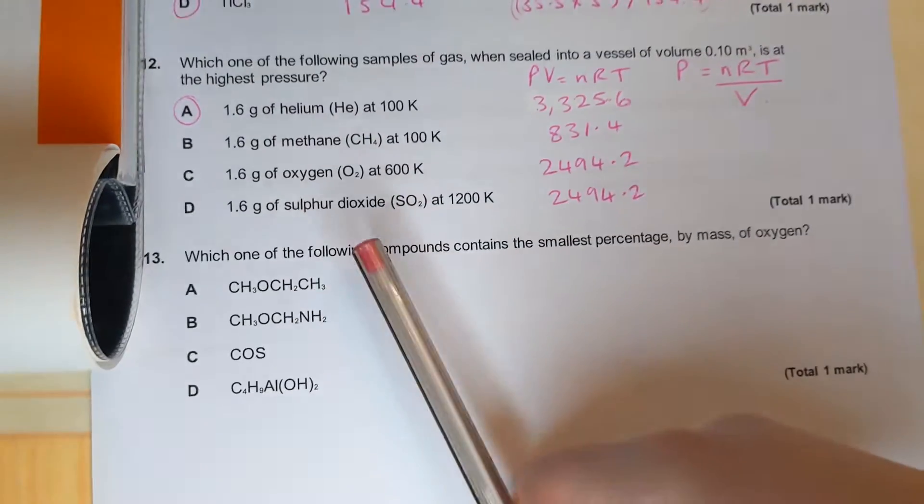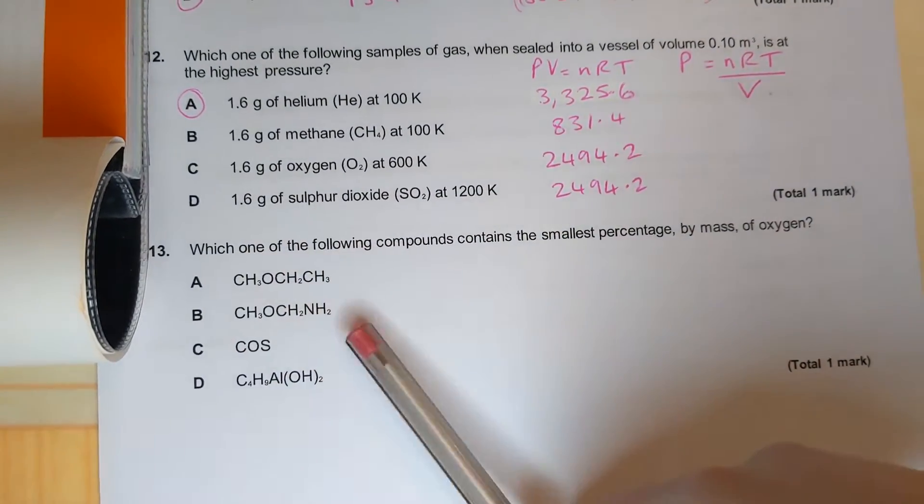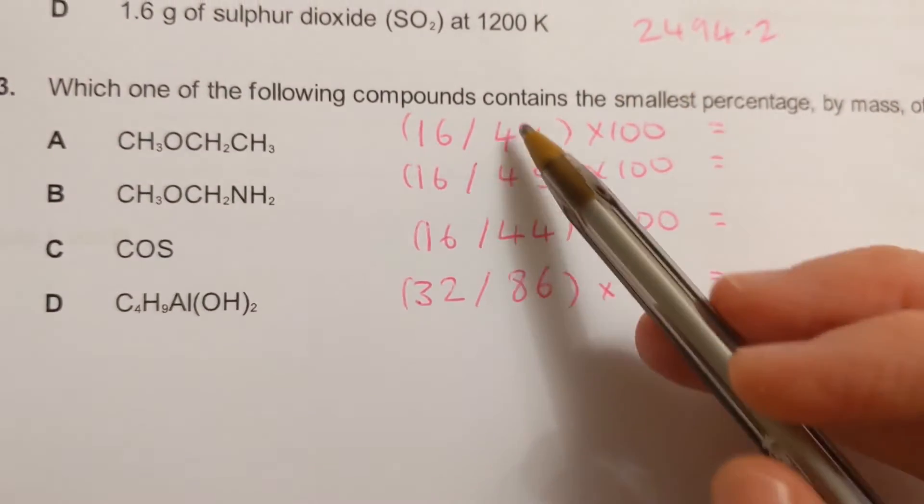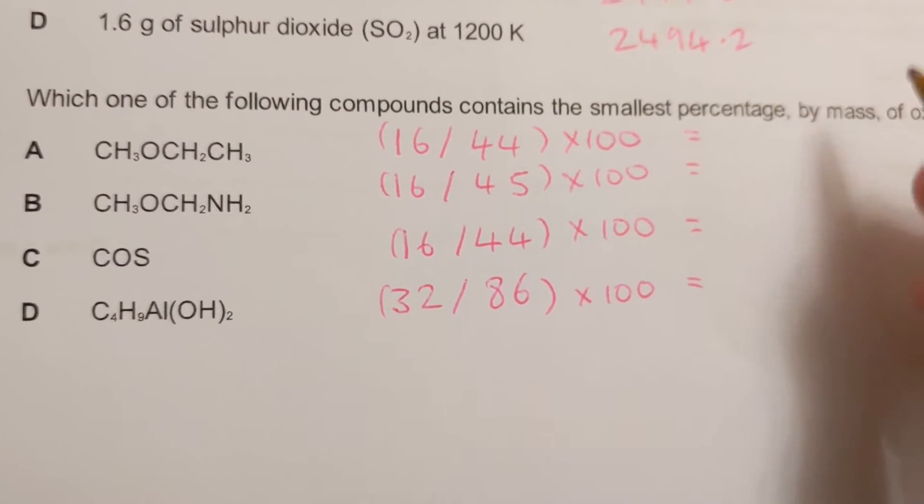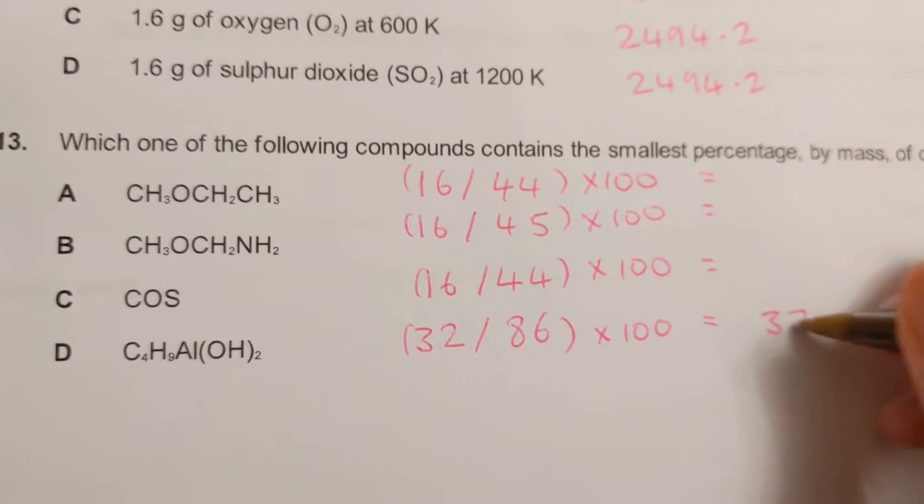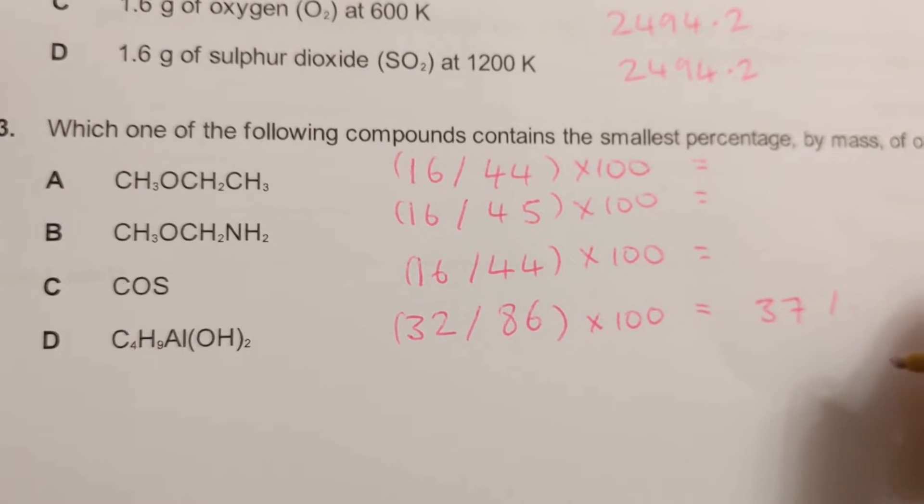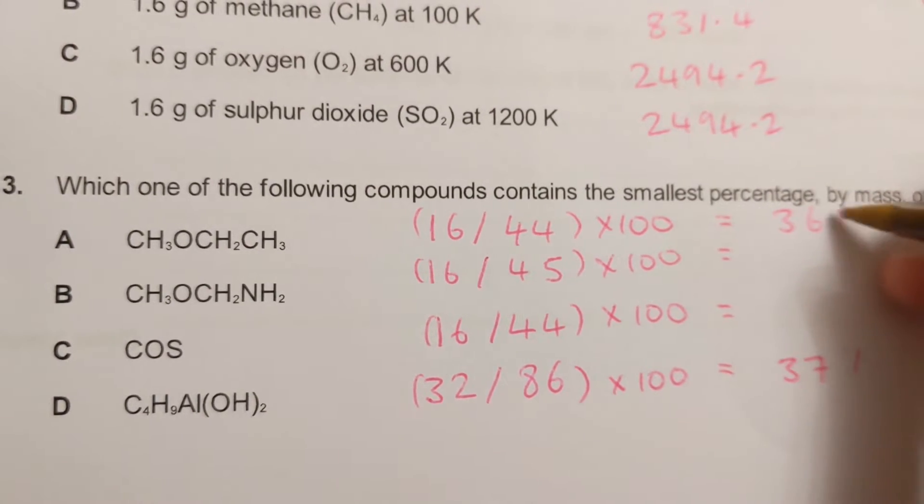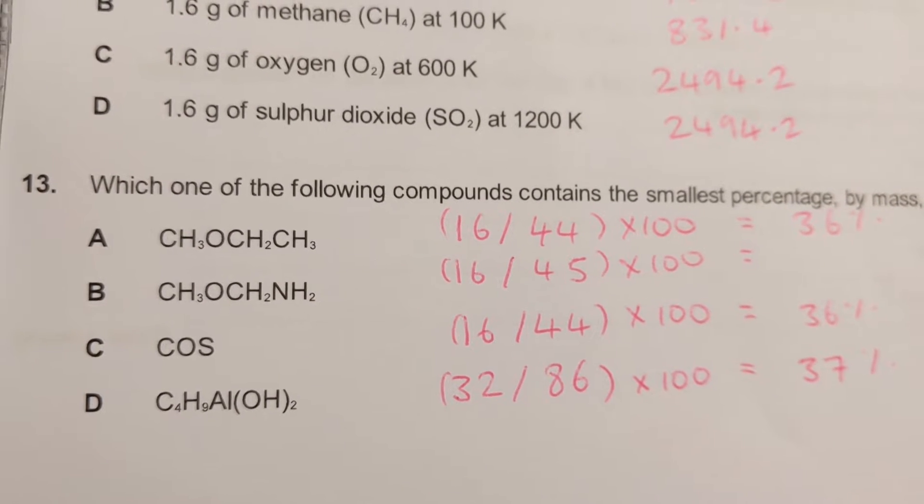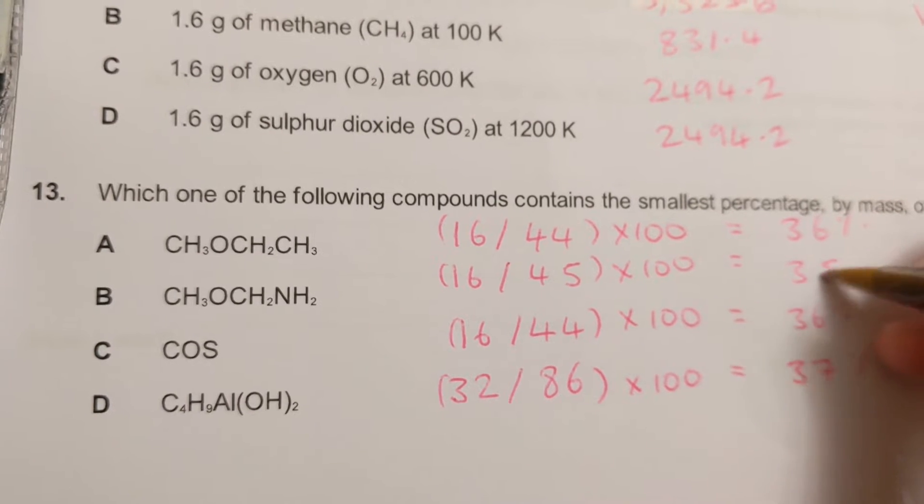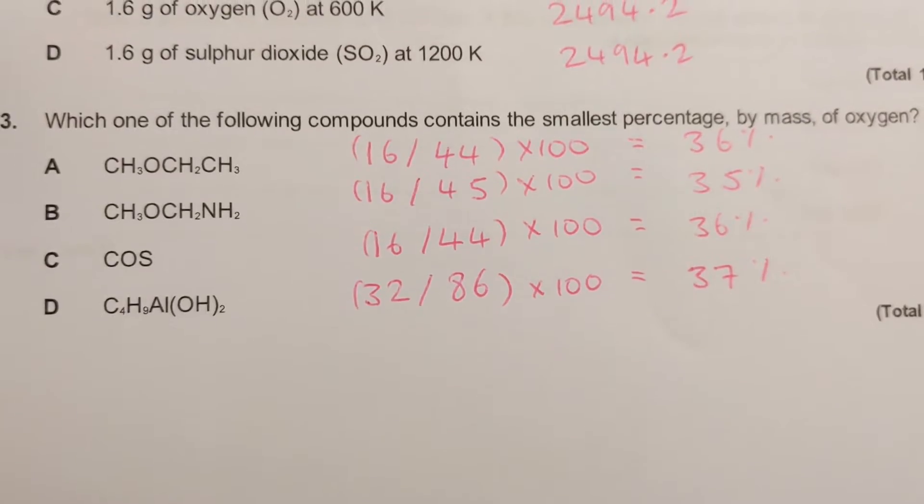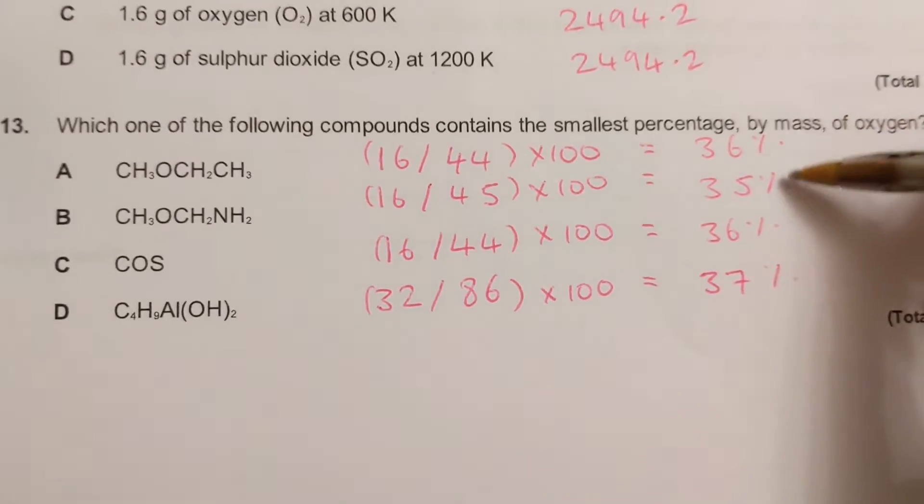And then do the mass of the oxygen divided by the mass of the compound times 100. So you should have come out with answers or working like this. Then we're going to finish this off. So the last one, thirty seven percent that comes to. And so we can see that the one with the smallest percentage by mass is this one, B.